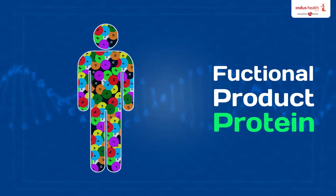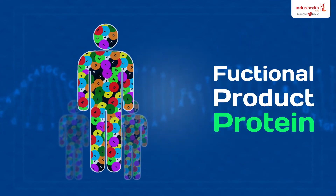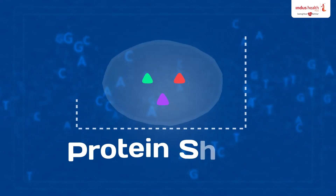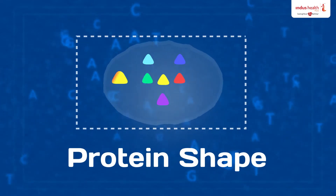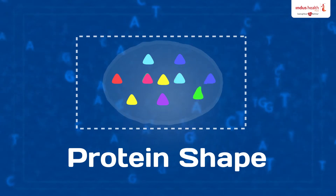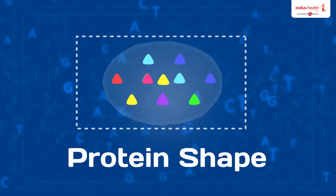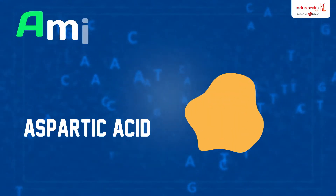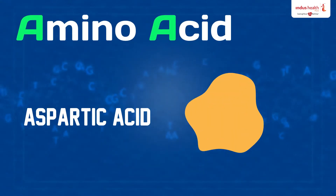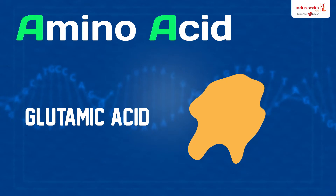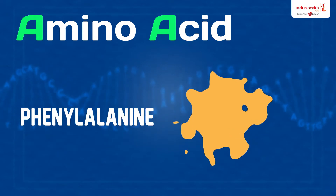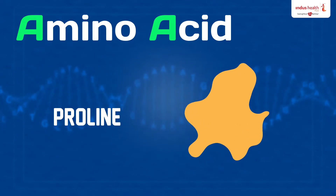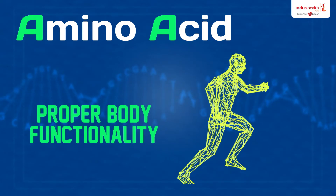One of the functions of protein is to create life. Proteins have to be formed in perfect shape to function correctly. DNA tells the amino acids to form themselves into perfect shapes in order to carry out body functionality.